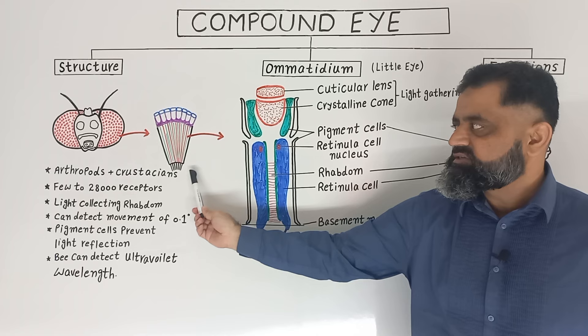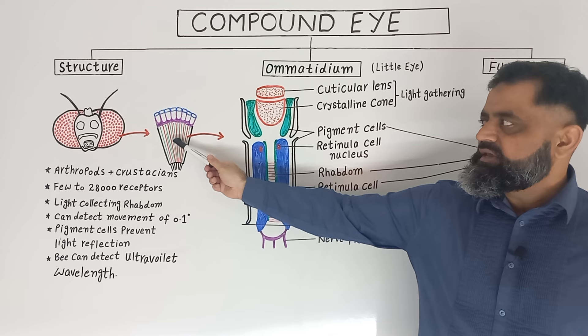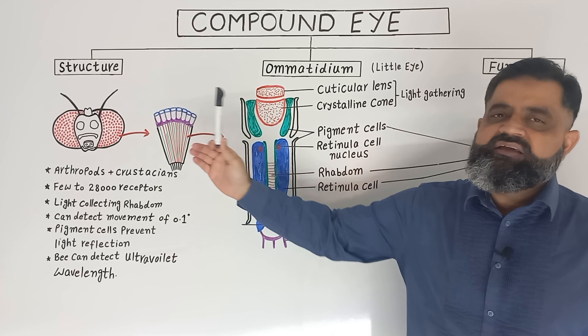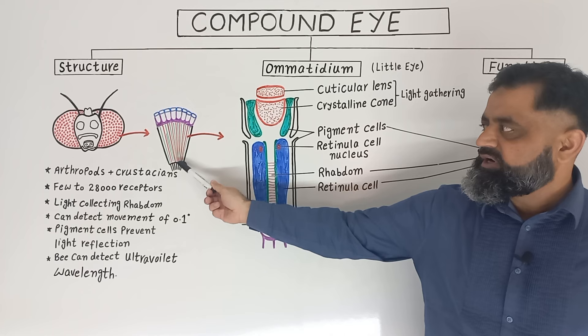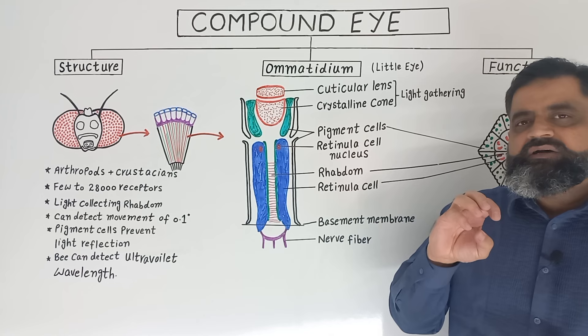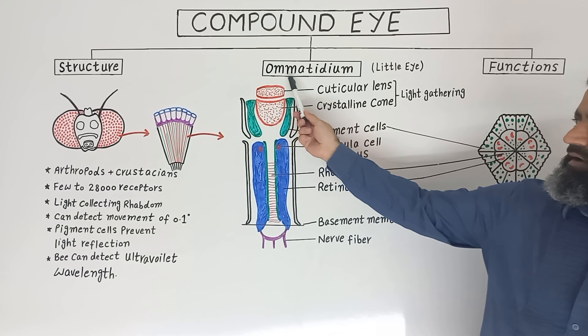There are thousands of ommatidia present in the compound eye of an insect. To understand the concept, I have taken a small section of the compound eye. In this diagram you can see there are many ommatidia arranged vertically, each at a slightly different angle from the other ommatidia.